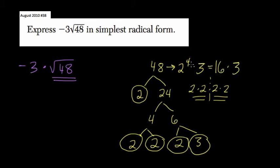I'm just going to rewrite this. So it says negative 3 times, instead of the square root of 48, we can take the square root of each factor. It's a nice rule we can use here.